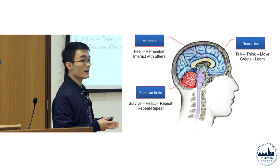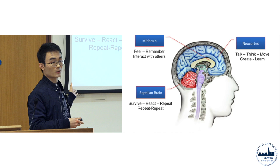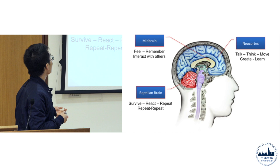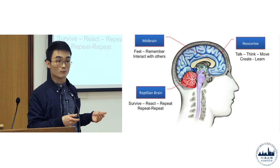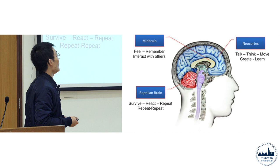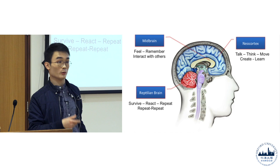If you have serious damages in this particular area of the brain, your life would be very miserable or you would die right away. And then the midbrain is this area — the yellow part — this is where sensory information is initially processed and it's also where new memories are initially formed. And then in the neocortex, it is where your language, your creativity, and your thinking are located.